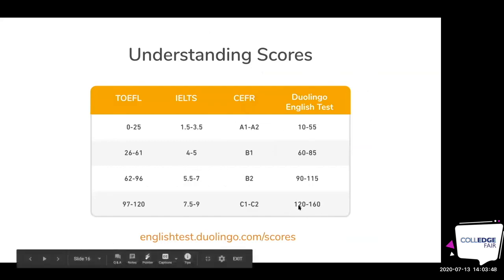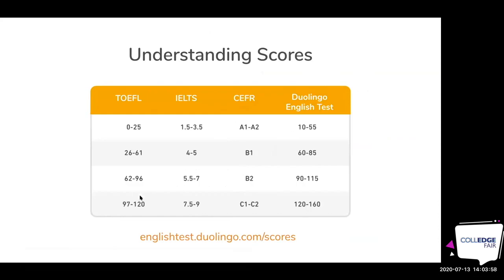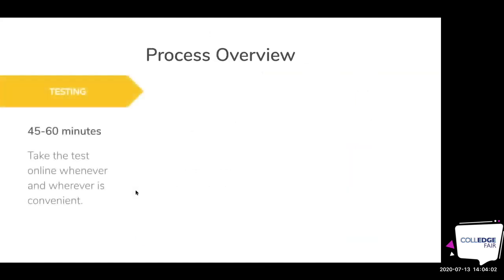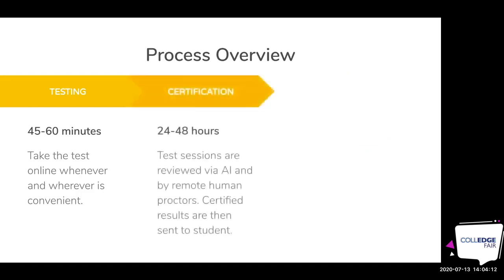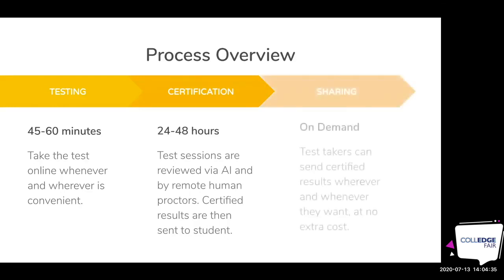The highest bandwidth is really 120 to 160 for our test, around a C1 or C2 on the CEFR, or a 7 to 7.5 on the IELTS. The test is around an hour. You'll take it online whenever and wherever it's convenient. You'll need a well-lit, private room. The certification happens over the next two days — the artificial intelligence reviews the test throughout, and two human proctors also view the tests at different levels and times to certify your results.